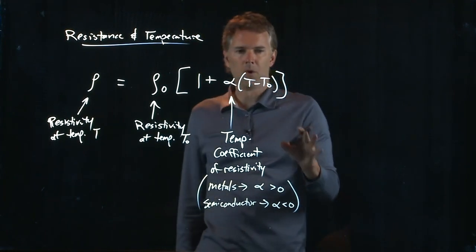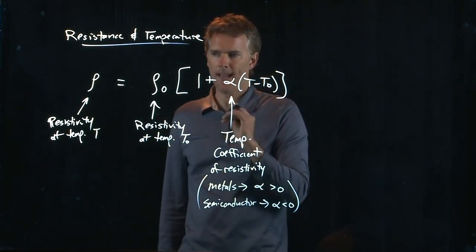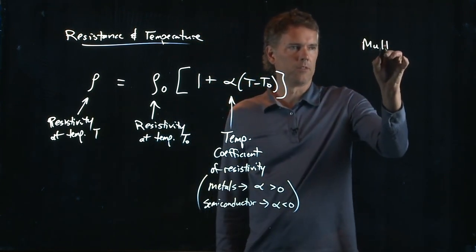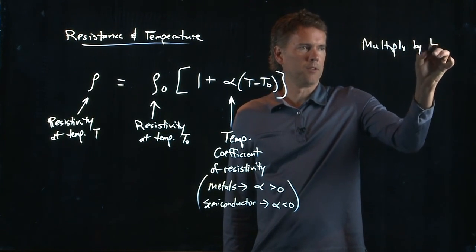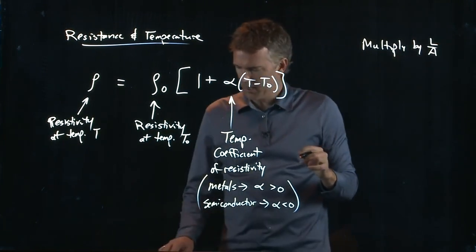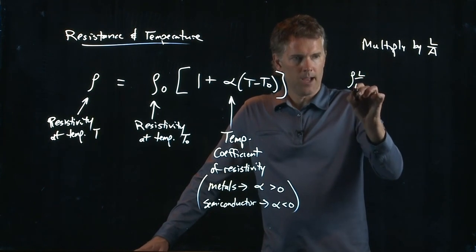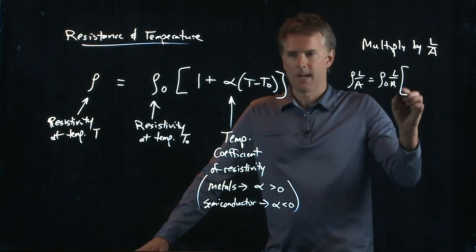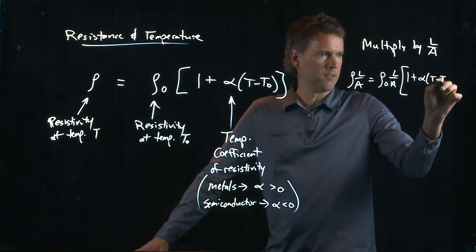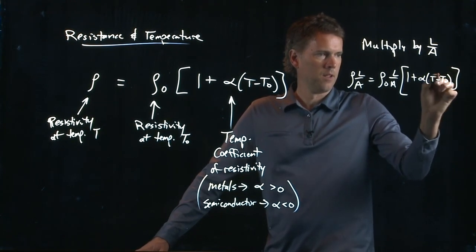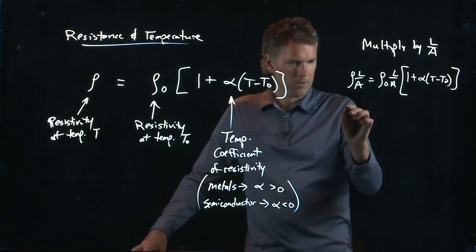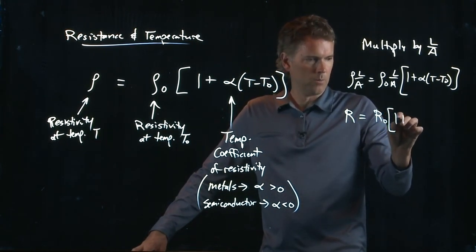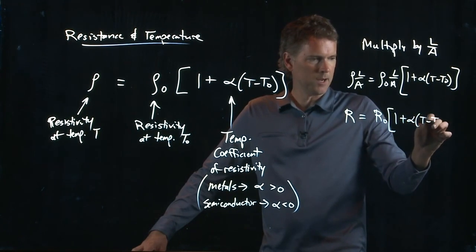All right, let's multiply both sides by L over A, and then we can change this into resistance. So if we multiply both sides by L over A, what do we get? We get rho L over A equals rho naught L over A times one plus alpha T minus T naught. And now this thing is just a resistance: R equals R naught times one plus alpha T minus T naught.